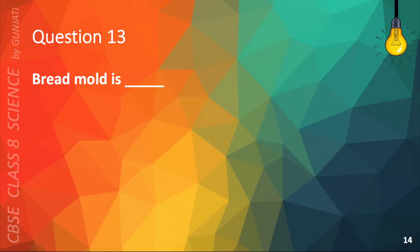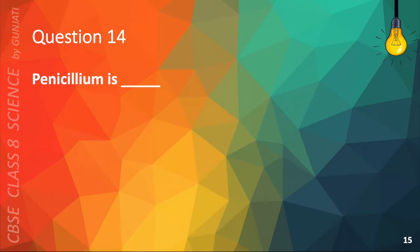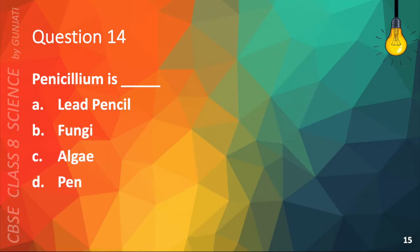Question 13. Bread mold is: A. Healthy, B. Fungi, C. Tasty, or D. Bacteria. The correct answer is B. Fungi. Question 14. Penicillium is: A. Lead pencil, B. Fungi, C. Algae, or D. Pen. The correct answer is B. Fungi.